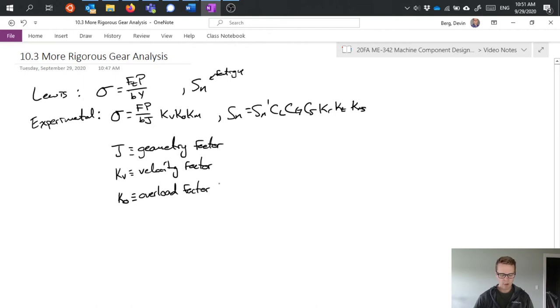Ko is an overload factor, read from table 15.1. This allows for variations in driving torque. So depending on how stable our input driving torque is, that can vary what we see there in the overload factor.